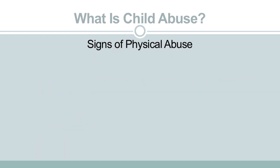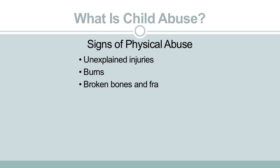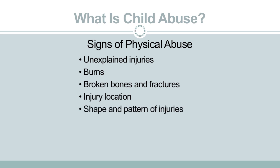There are signs commonly seen in cases of physical abuse, such as unexplained injuries; burns, especially cigarette burns or immersion burns; broken bones and fractures; the injury location, such as injuries in areas hidden from view like the back or back of the legs, or areas less common for standard childhood injury; and the shape and pattern of the injuries, which could indicate the use of a tool or implement, such as a belt, hanger, or wire — you might even be able to make out hand prints or finger marks.